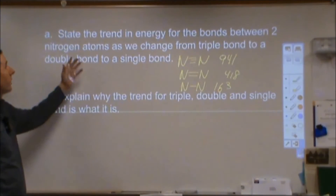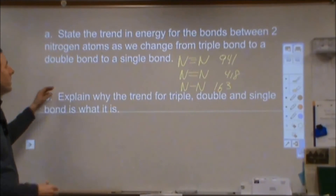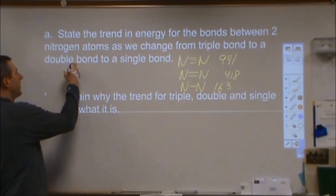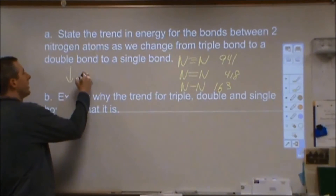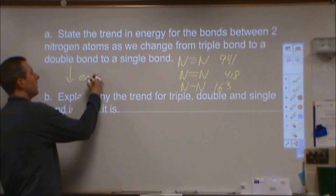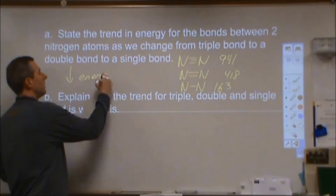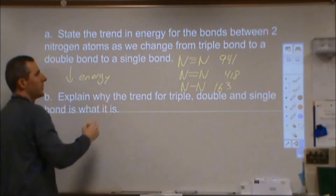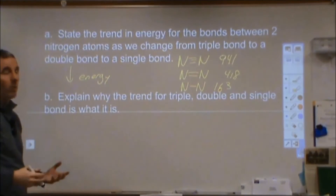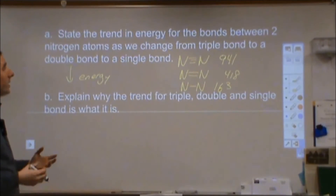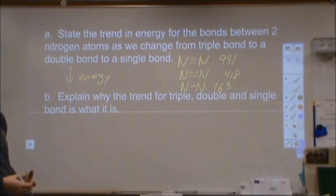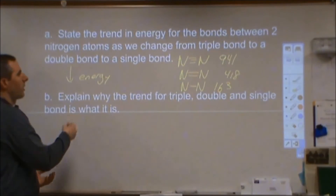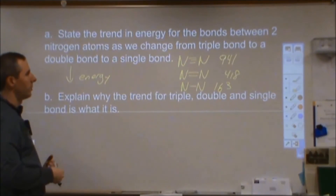When we state the trend from triple bond to double bond to single bond, we are decreasing the energy of those bonds. We could also say they're becoming weaker bonds, or that the triple bond starts as the strongest bond.